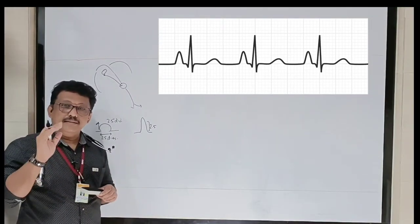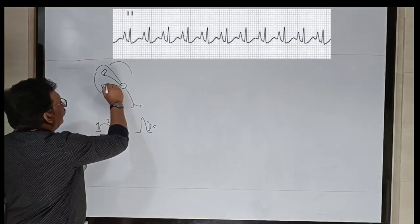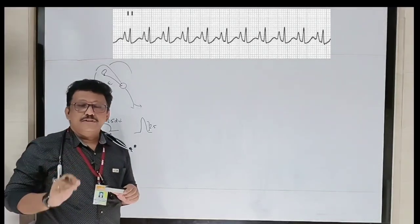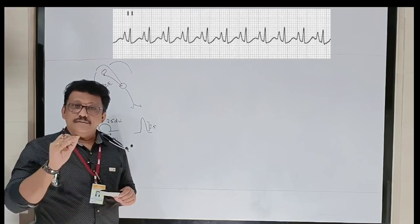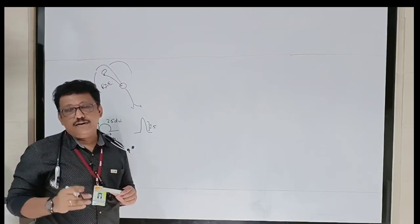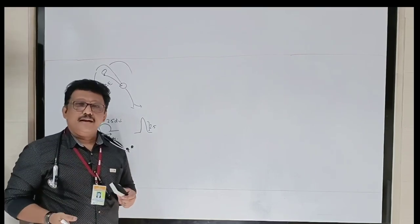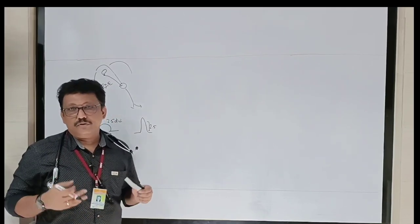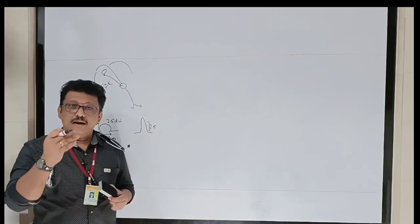P pulmonale is a feature of right atrial enlargement. This is classically seen in COPD with right atrial or right ventricular enlargement — we call it cor pulmonale. The same thing can also happen in acute pulmonary embolism.